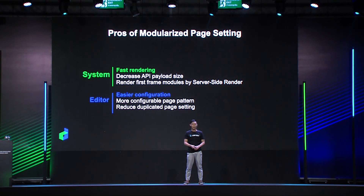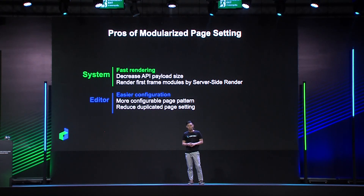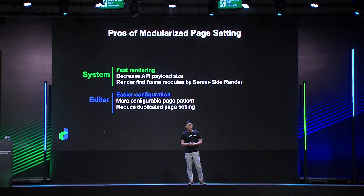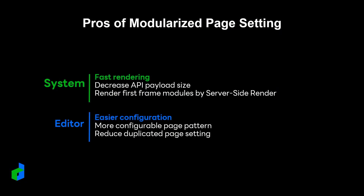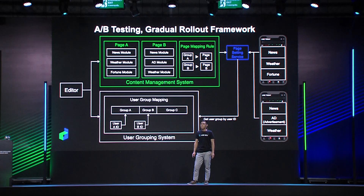What are the benefits of modularized page setting? From the system's point of view, it achieves fast rendering by shortening the page load time. Through modularized page setting, a single bulky API is separated into several module APIs and the API payload size is decreased. Most importantly, only the top few modules in the first frame need to be rendered initially when you open Line Today, and the lower modules can be rendered by lazy loading afterwards, which significantly decreases page load time. From the editor's point of view, modularized page setting is easier to configure — a page can be simply composed by different modules, reducing lots of duplicated settings. Based on this architecture, a new A/B testing framework is also introduced, which can also be used when a new feature needs to be gradually rolled out.